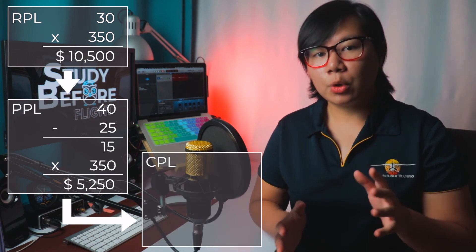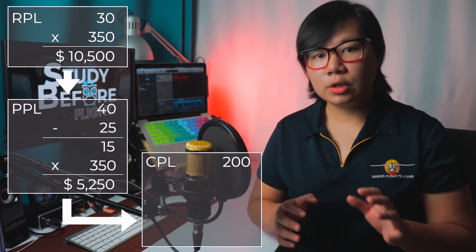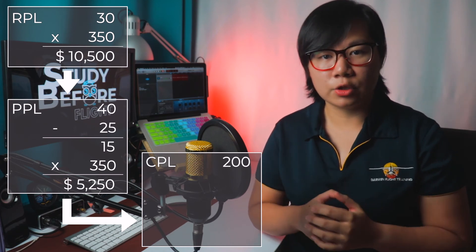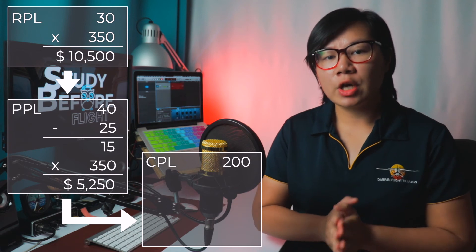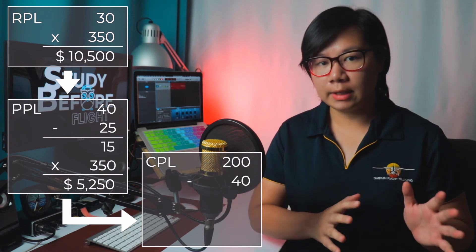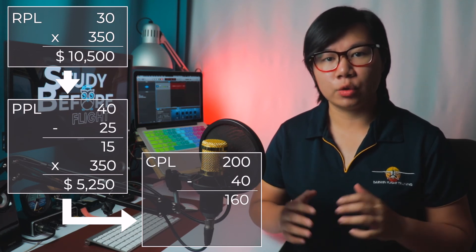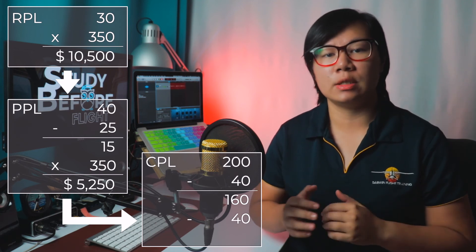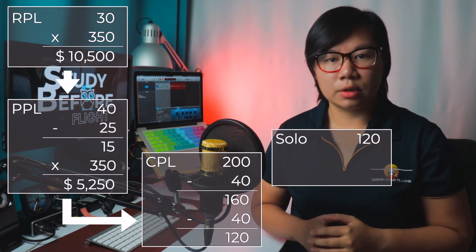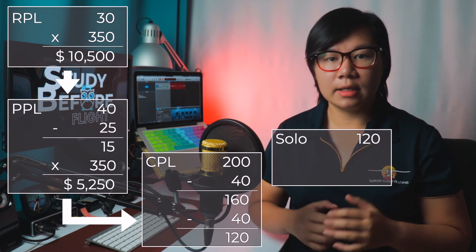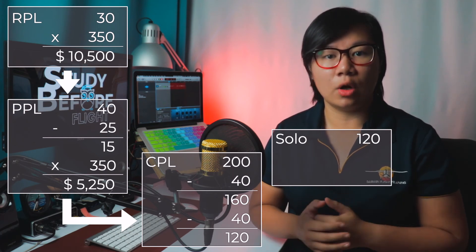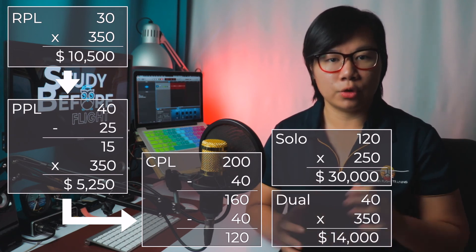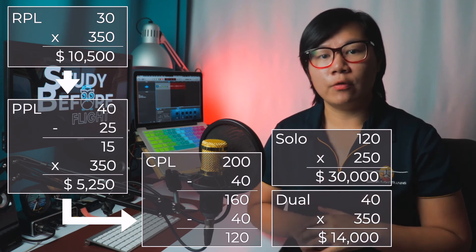Moving to CPL, you require a minimum of 200 hours. You can hire the plane at a lower cost since you already have a PPL and won't be under instructor supervision. So, 200 hours minus 40 hours for the PPL means you need an extra 160 hours. Let's say you reserve 40 hours to fly with an instructor to get up to CPL standard — you'll need 120 hours of solo time. Private hire costs around $250 to $350 per hour. Overall, you need about $30,000 to build your solo time, then $14,000 for dual training with an instructor, totalling $44,000.